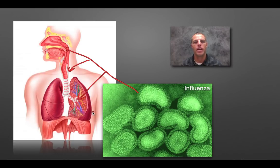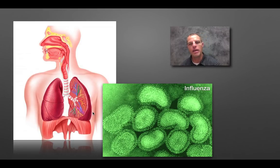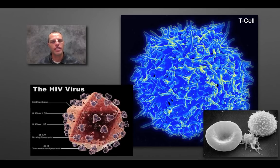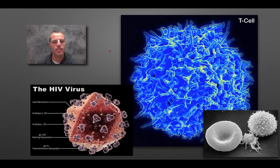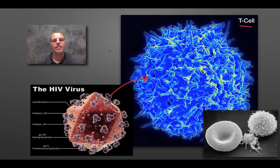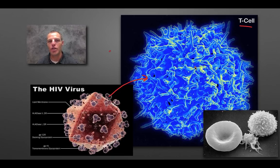Viruses cause disease by disrupting homeostasis, basically killing the cells in the process — that's why you don't feel very well. Another type of virus I want to point to is the HIV virus. If you look here, you have these glycoproteins, those little spikes. The glycoproteins on the HIV virus allow it to attach to and attack T cells. T cells are an important part of our immune system.